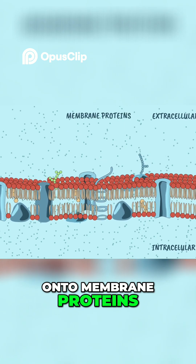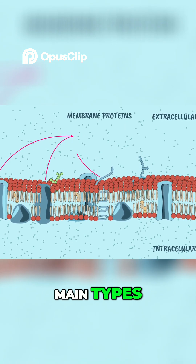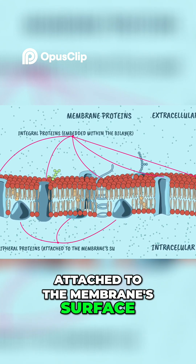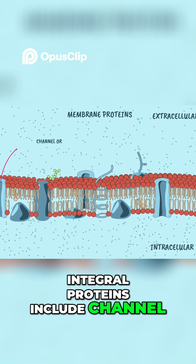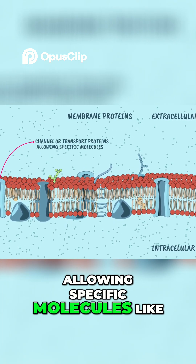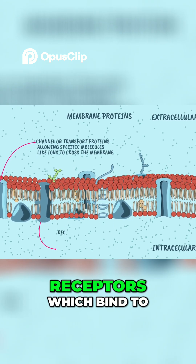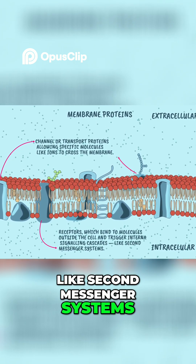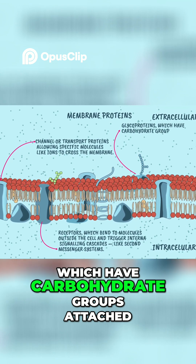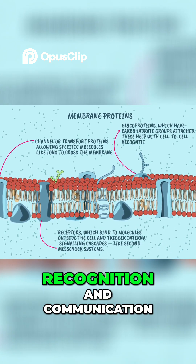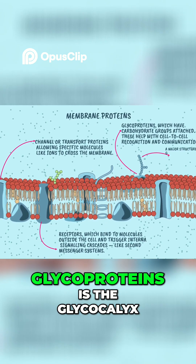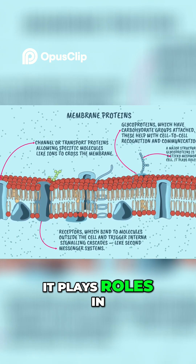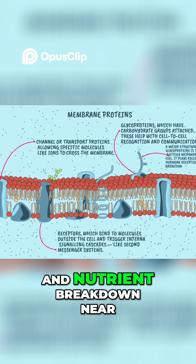Now, onto membrane proteins. They come in two main types: integral proteins, embedded within the bilayer, and peripheral proteins, attached to the membrane's surface. Integral proteins include channel or transport proteins, allowing specific molecules like ions to cross the membrane; receptors, which bind to molecules outside the cell and trigger internal signaling cascades like second messenger systems; and glycoproteins, which have carbohydrate groups attached and help with cell-to-cell recognition and communication. A major structure involving glycoproteins is the glycocalyx, a sticky meshwork outside the cell, which plays roles in cell binding, hormone reception, and nutrient breakdown near the cell surface.